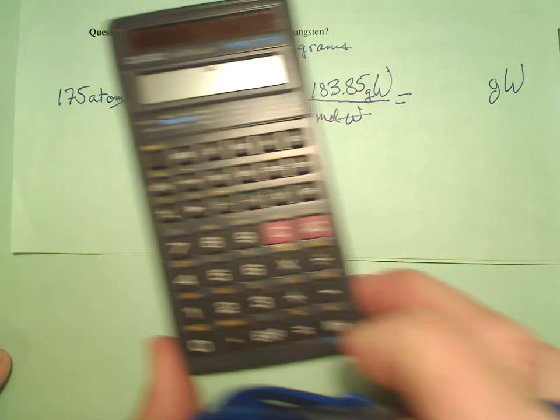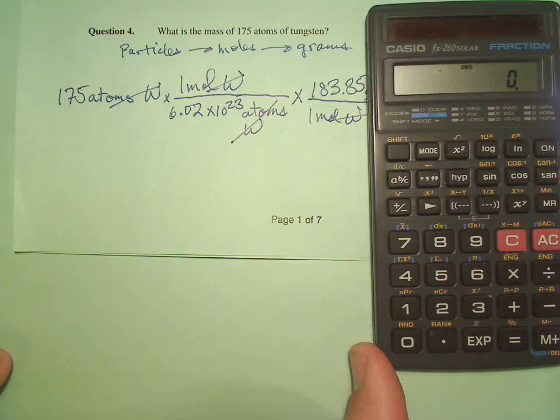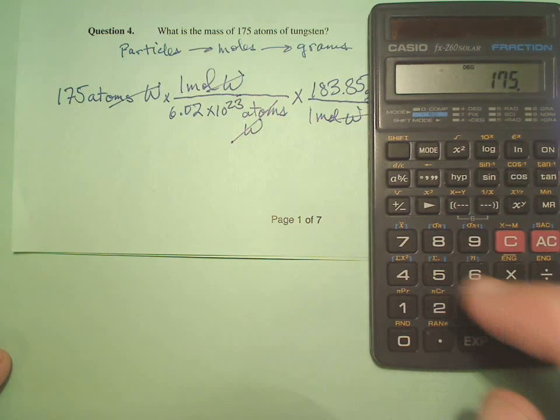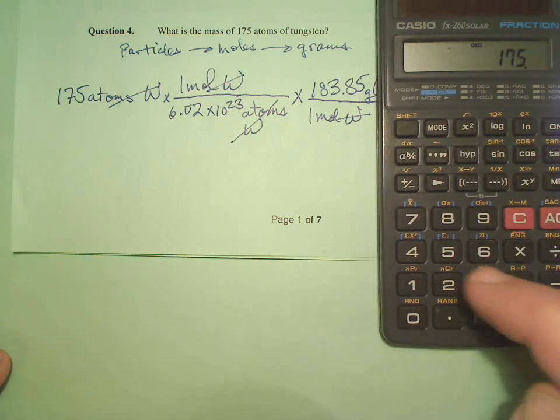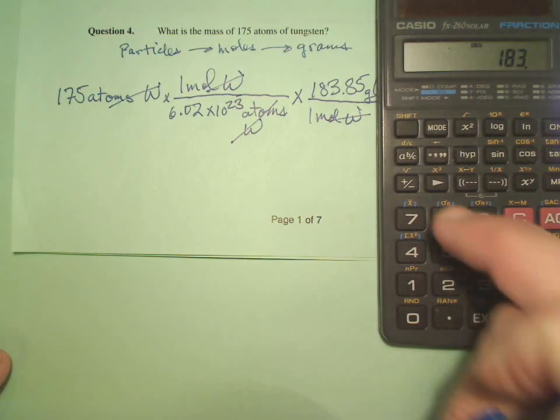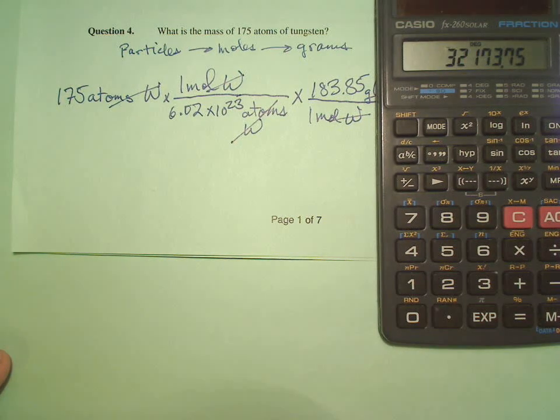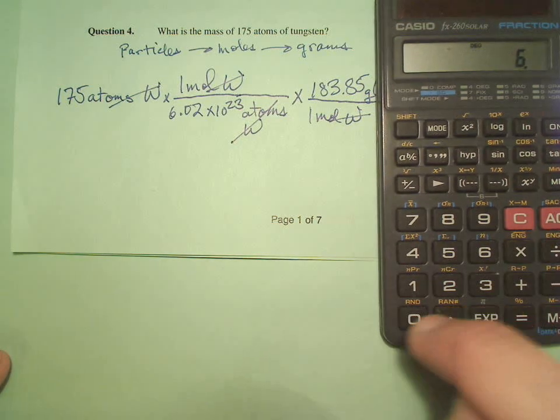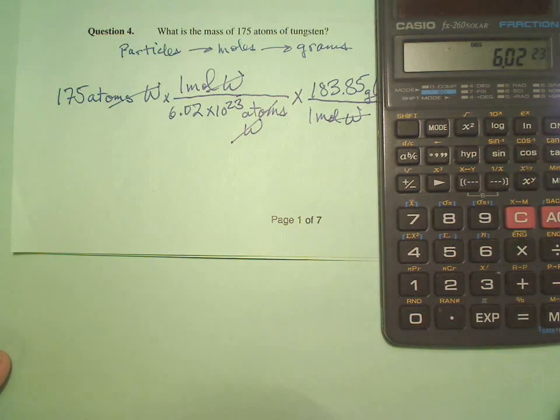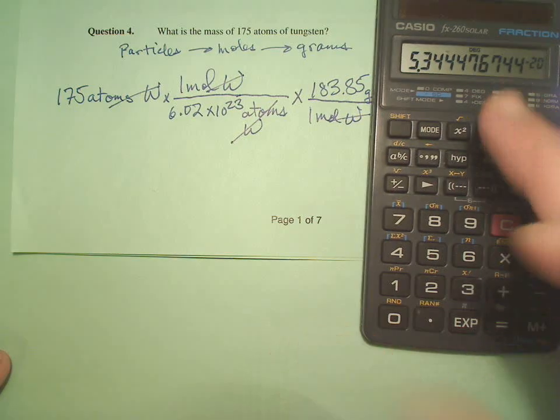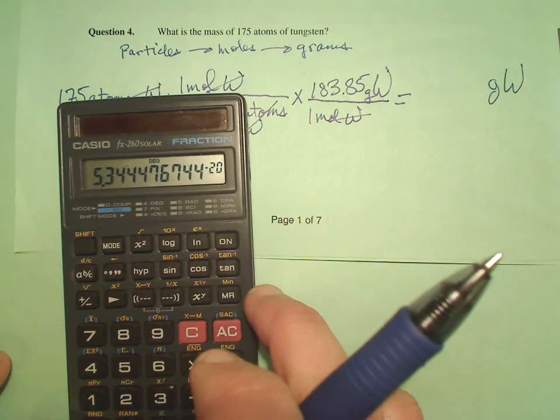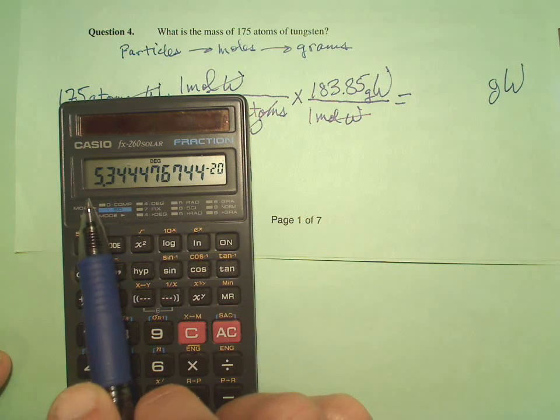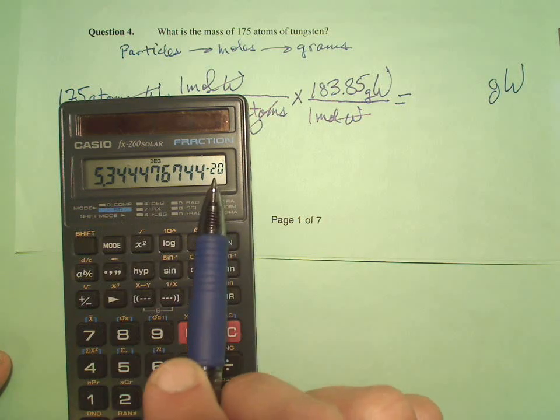So now let's do this. So we have 175 times 183.85, 183.85, divided by 6.02 EE23, equals, whoop, there's our small number. Look at that. Kind of glary right there with the light.